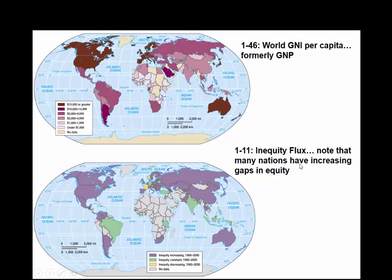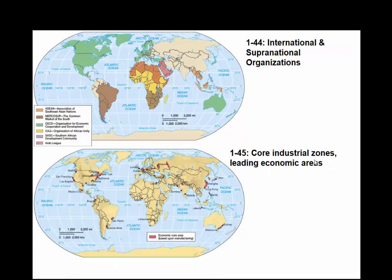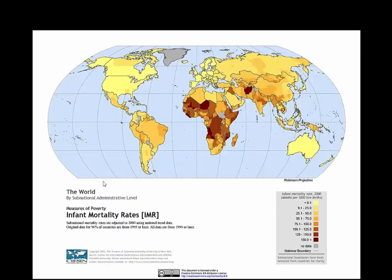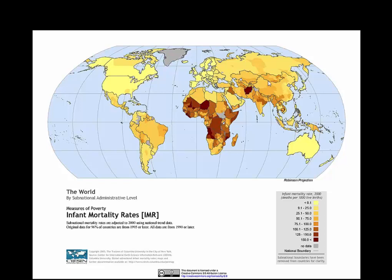We've been seeing increasing inequality, with the schism between rich and poor growing higher. We have supranational and international organizations, and core industrial zones — we're part of one at Germanna Community College along the Route 95 corridor up through Boston. Indicators of social development include mortality rate, life expectancy, and secondary school enrollment. We'll look at a lab later in the semester on the Human Development Index, a calculation scaled to a value of one. Infant mortality rates are extremely high in some countries — about one out of every six children doesn't make it to their first birthday.